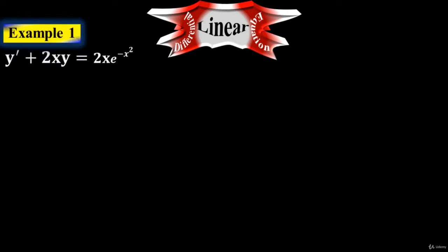Let me do some tutorials here based on the previous procedure that I have shown you in the previous lecture, on how to solve a standard linear differential equation. Here we go. Example number one: y prime plus 2x times y equals to 2x times e to the minus x squared. This is our given expression.